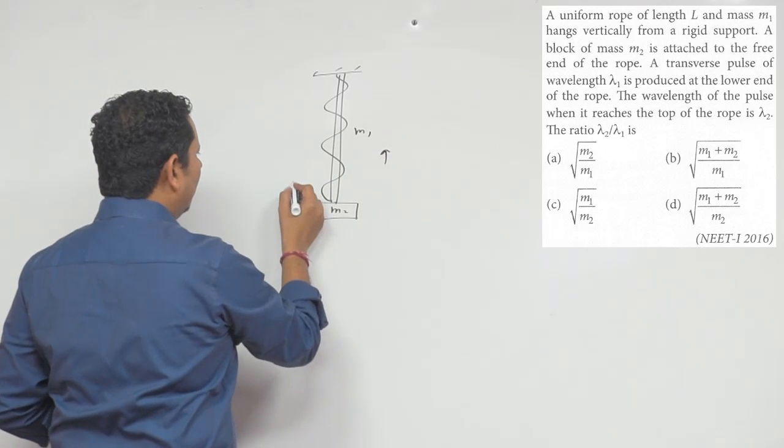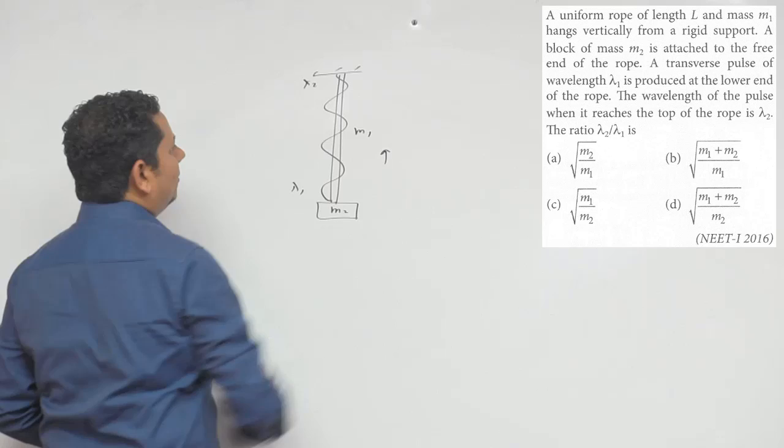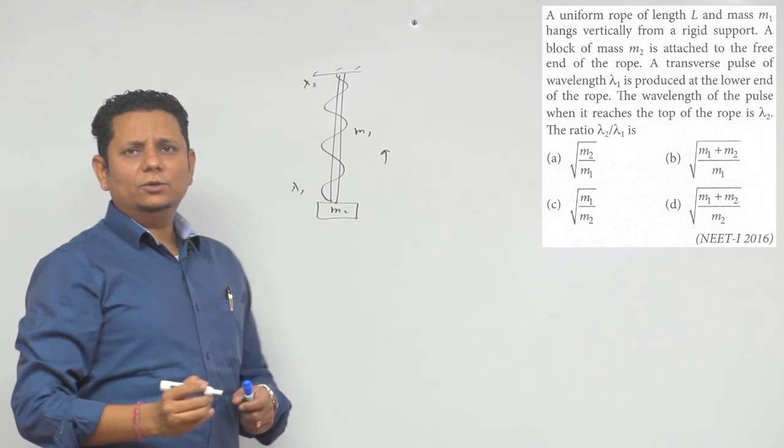The wavelength of the wave is going up. Here the wavelength is lambda 1, and here at the top the wavelength is lambda 2. Let's determine what the ratio of the two is.